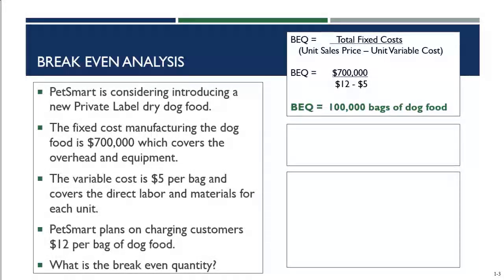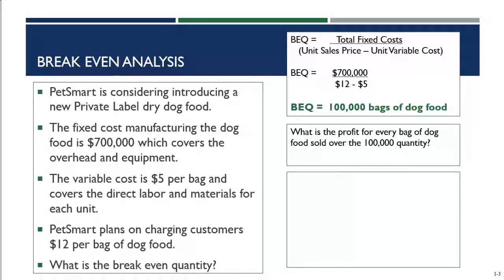The second question PetSmart asks: what is the profit for every bag of dog food sold over that 100,000 quantity? To figure that out, we take unit sales price minus unit variable cost. We don't need to consider fixed costs because those are already covered in the break-even quantity — at that point, fixed cost is effectively zero. So profit per bag over 100,000 units is $12 − $5 = $7.